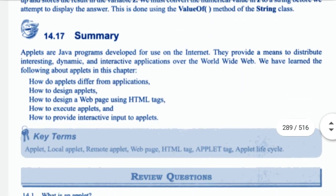Summary. Applets are Java programs developed for use on the internet. They provide a means to distribute interesting, dynamic, and interactive applications over the World Wide Web. In this chapter we have learned: how applets differ from applications, how to design applets, how to design a web page using HTML tags, how to execute applets, and how to provide interactive input to applets.